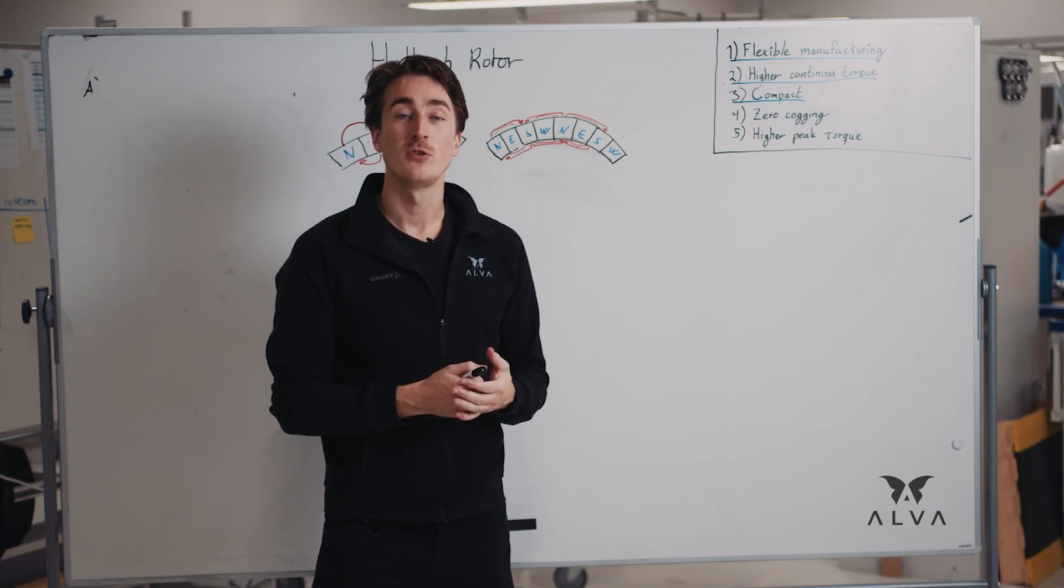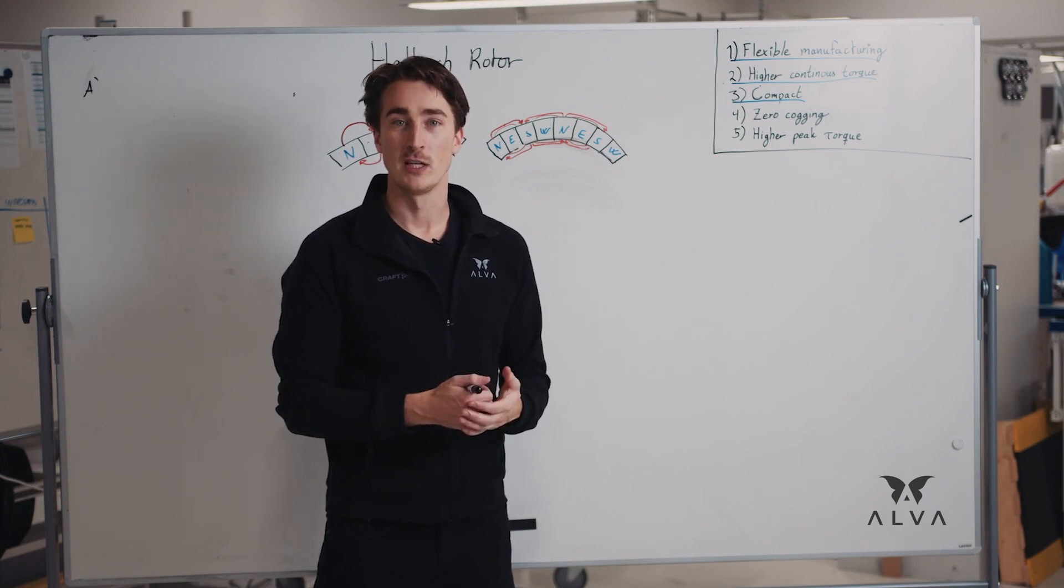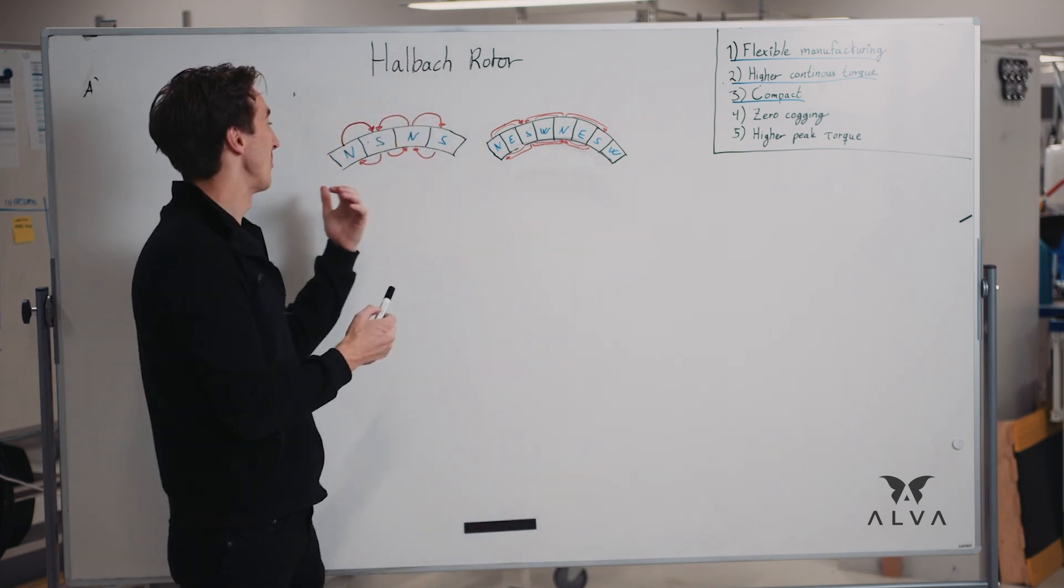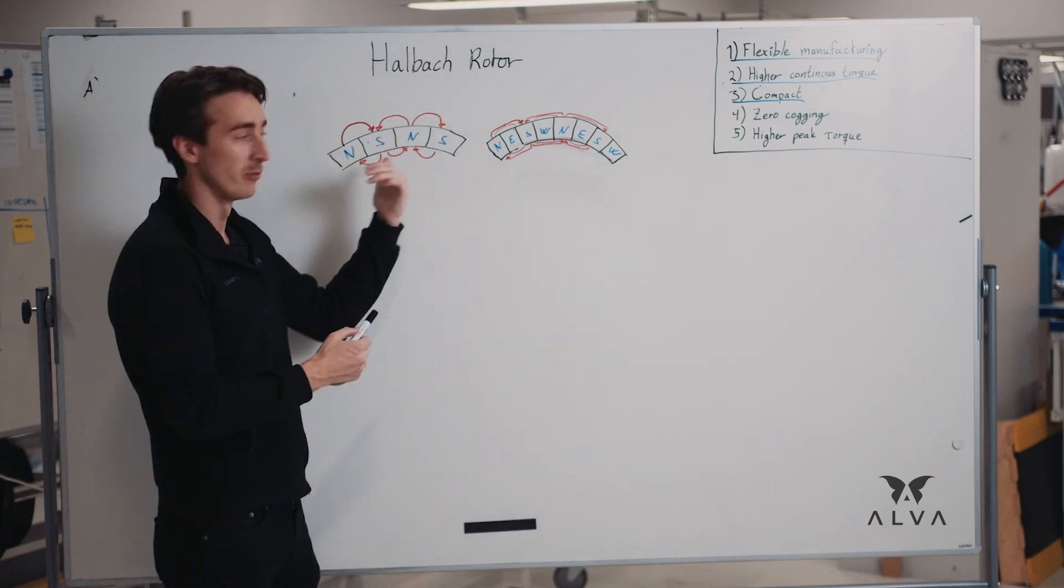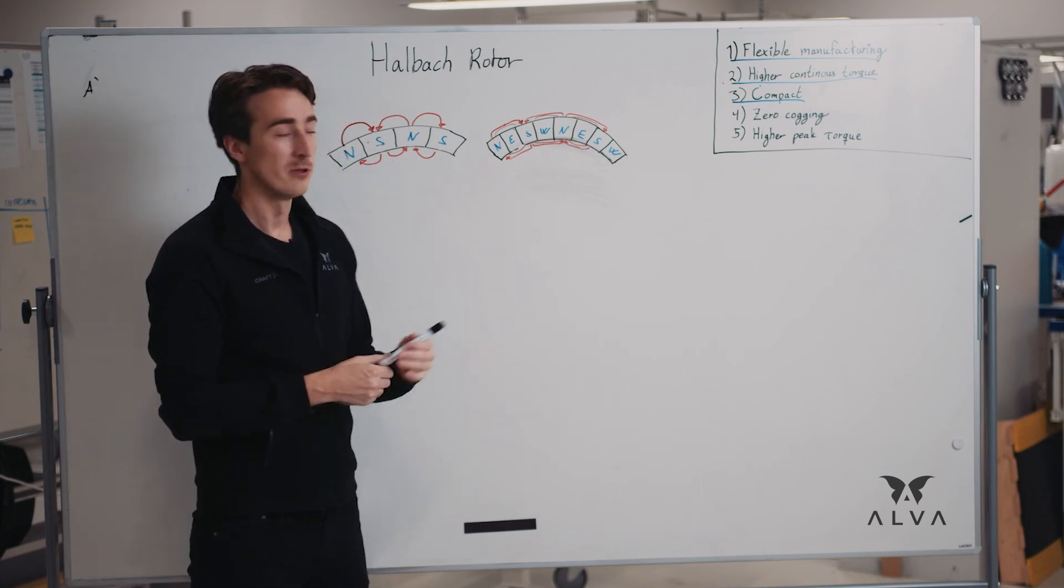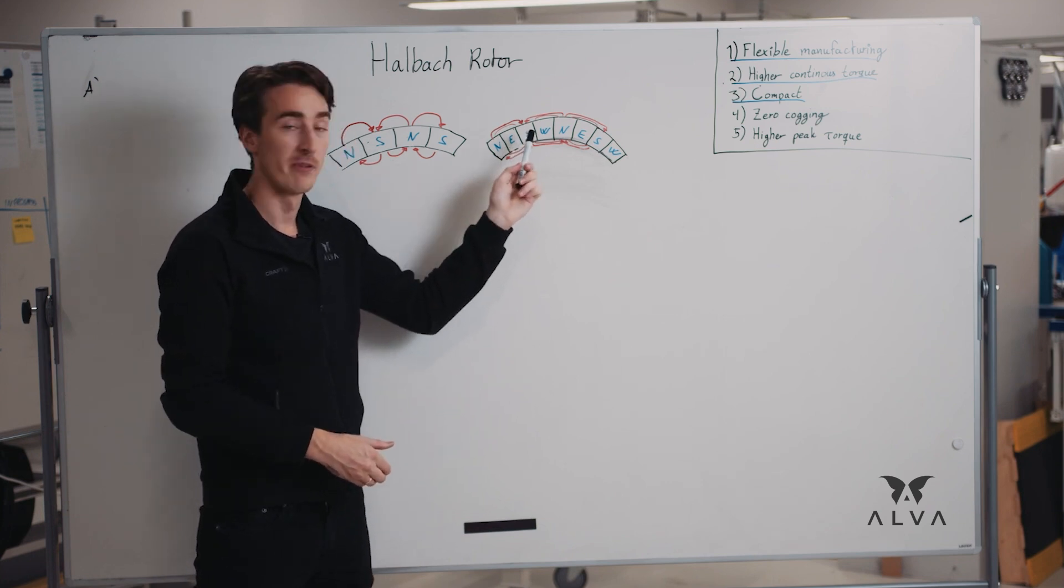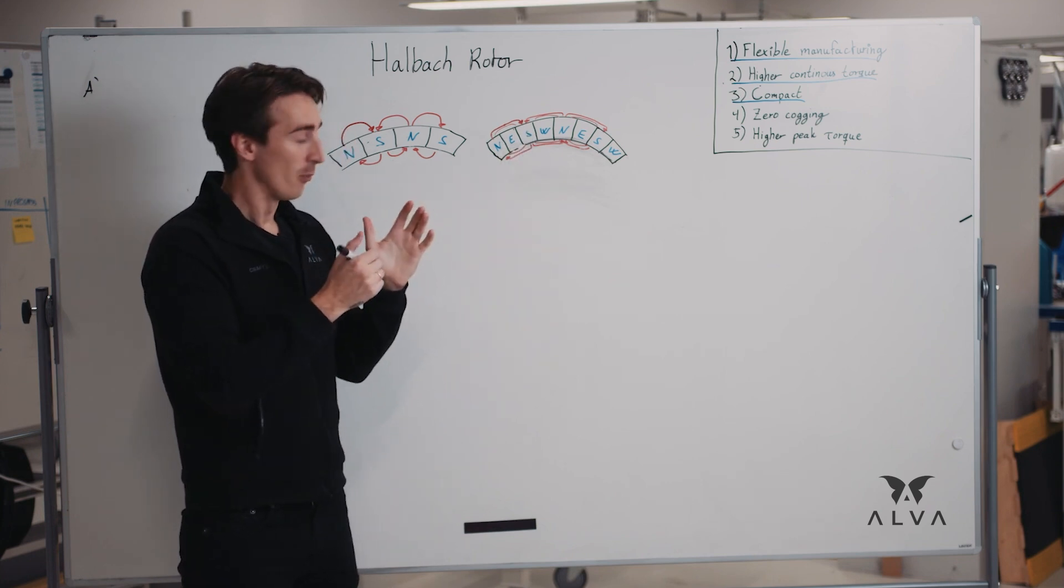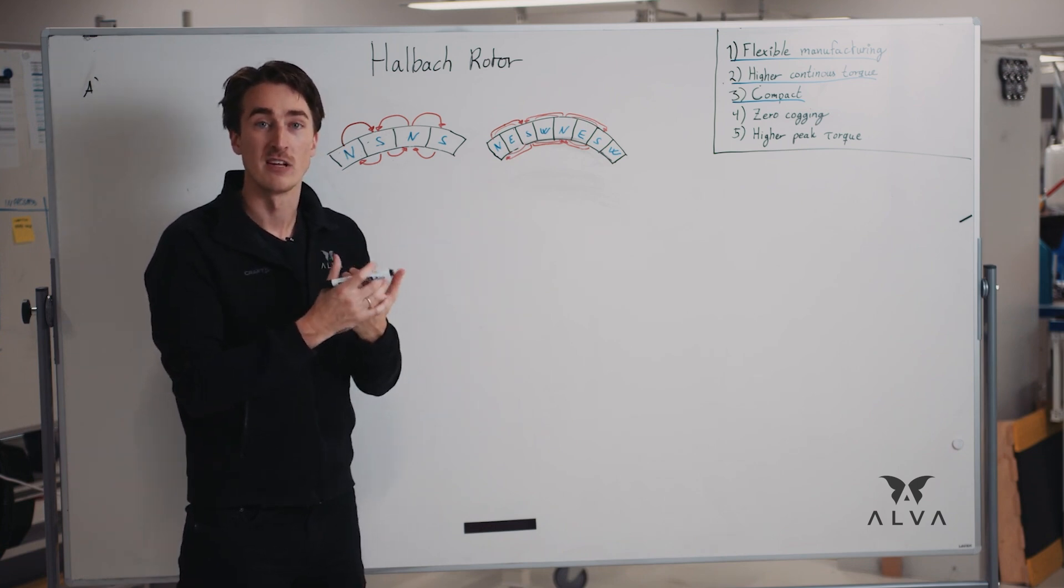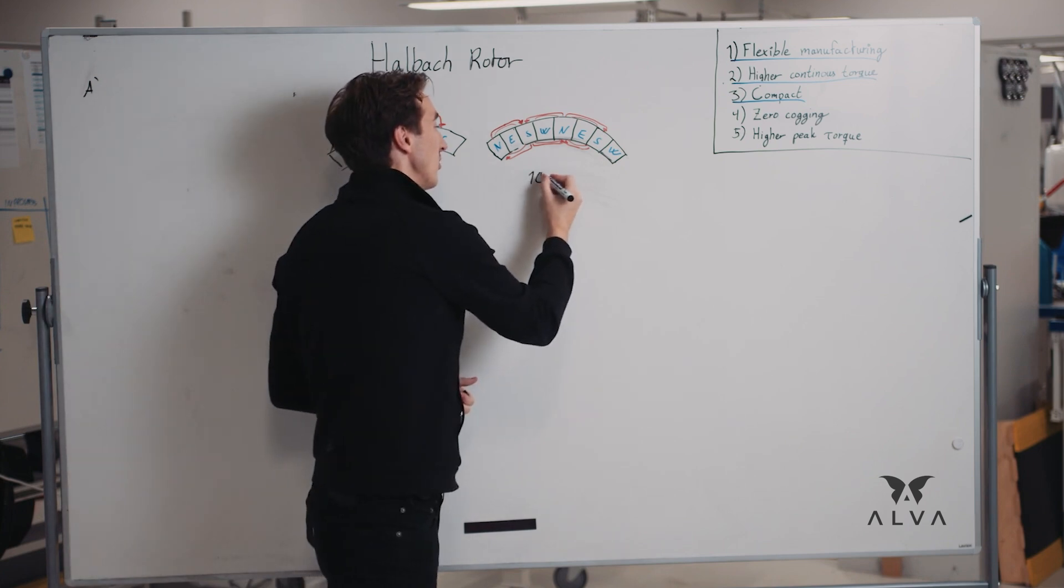So in addition to the fiber printed windings of Alva's motors, we also develop Halbach array rotors. In traditional rotors, you have a magnet array of north, south, north, south, like here. In a Halbach array rotor, the magnets are tilted 90 degrees to form a north, east, south, west pattern, where the added magnets, east and west, helps strengthen the magnetic flux density, which increases the torque output of the motor 10 to 20 percent.